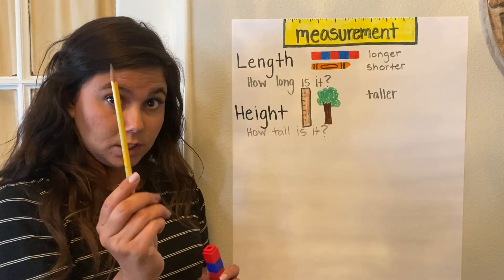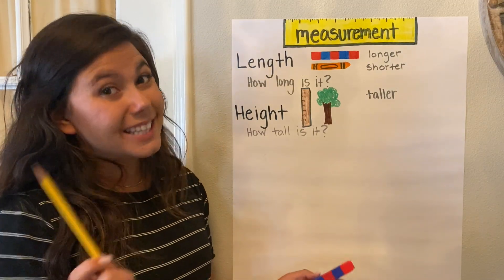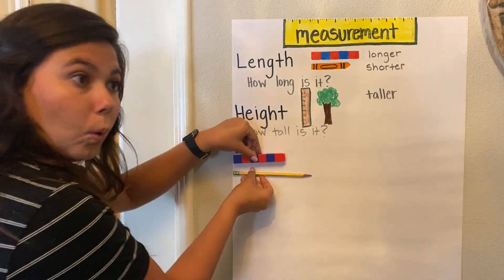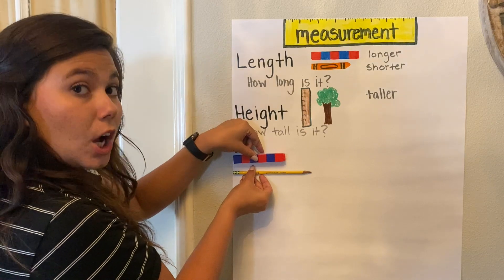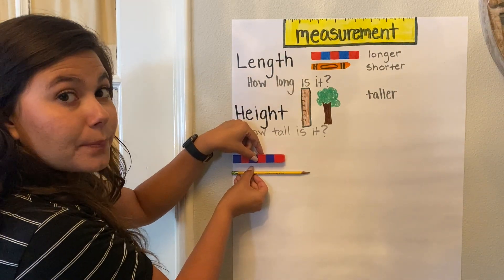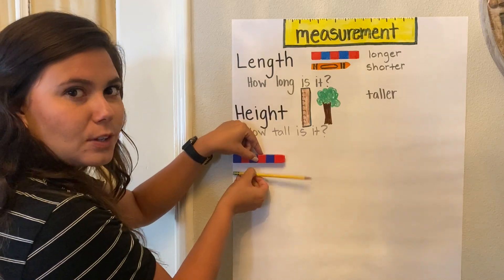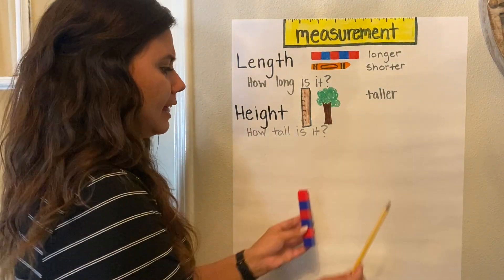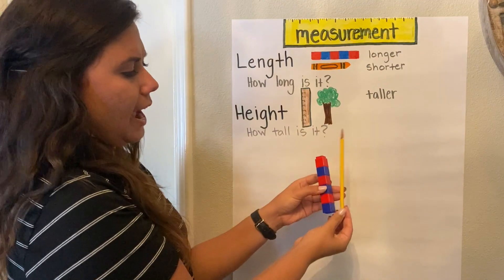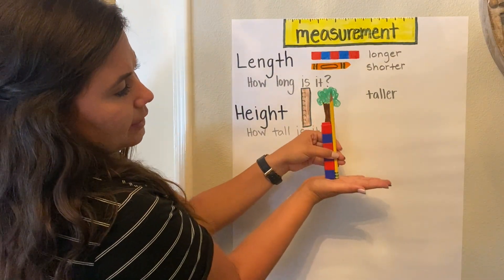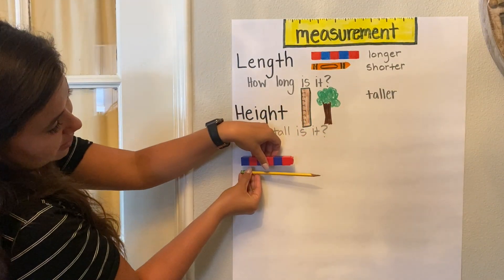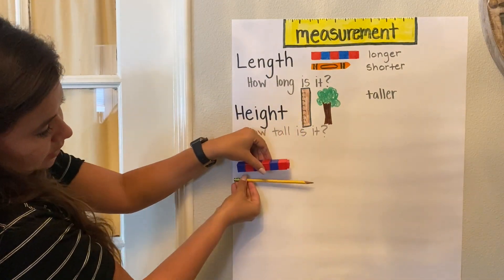I also brought over my pencil. Now I have to start where? In the same spot, right? So if I'm going to put the cube train against the paper, I need to put the pencil at the paper too. Things have changed. Which one is longer? The pencil is longer than the cube train. Which one is shorter? The cube train is shorter than the pencil. Now what if I turned it like this? Now we're talking about the height - it's going up and down. So which one is taller? The pencil is taller and the pencil is longer.